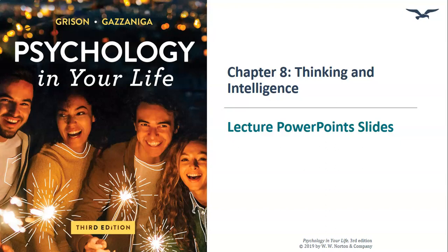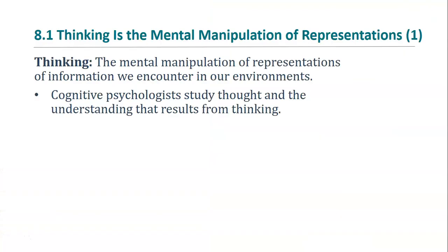Today we're going to talk about Chapter 8 in the textbook, Thinking and Intelligence. Thinking may be generally described as mental manipulations of the representations of information we encounter in our environment. In other words, thinking is moving around and analyzing the cognitive representations of the outside world and our internal experience.